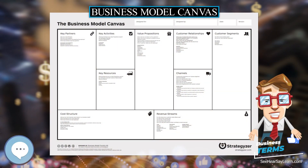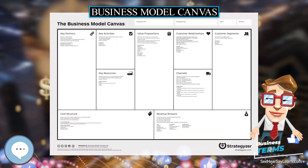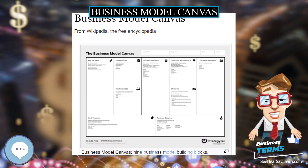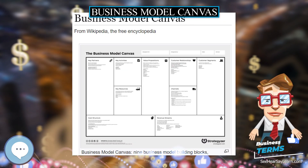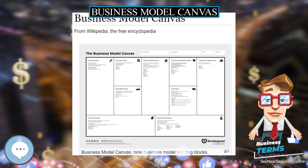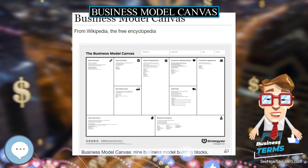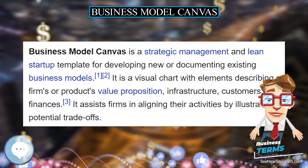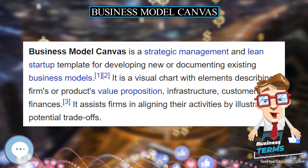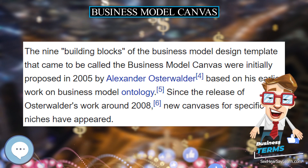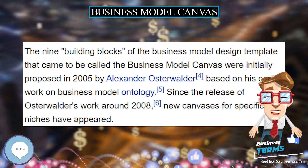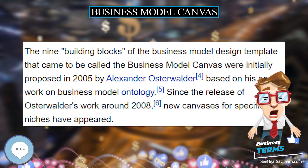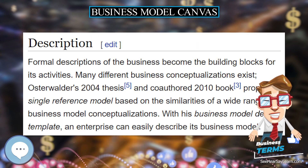The Business Model Canvas is a strategic management and lean startup template for developing new or documenting existing business models. It is a visual chart with elements describing a firm's or product's value proposition, infrastructure, customers, and finances.